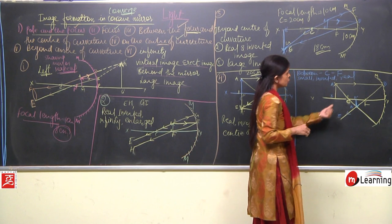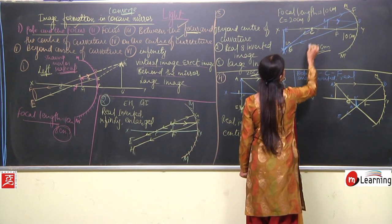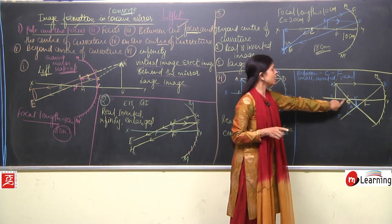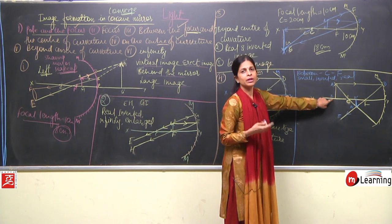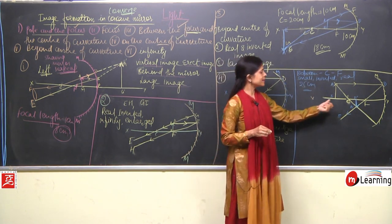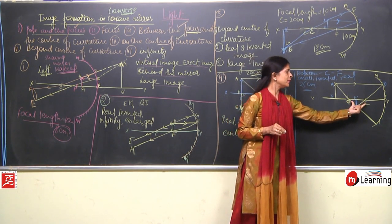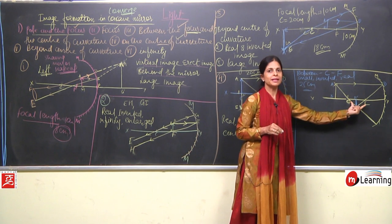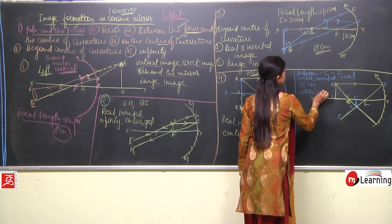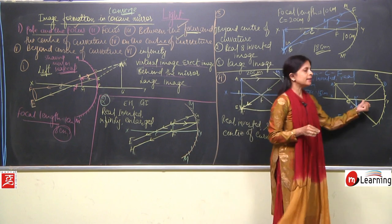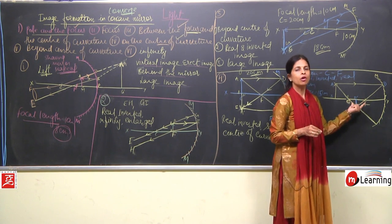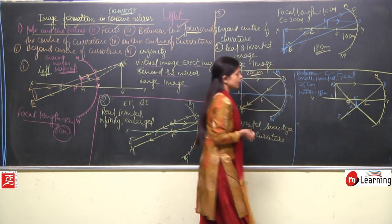Our focal length is 10 centimeters, so center of curvature is 20 centimeters. We have kept the object at 25 centimeters — beyond 20. The image is formed somewhere between 10 to 20 centimeters — between center of curvature and focus — say at 15 centimeters. Focus is at 10 cm, center of curvature is at 20 cm, and the image is formed somewhere like 15 centimeters.